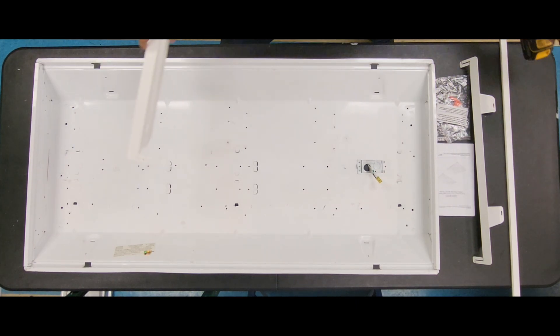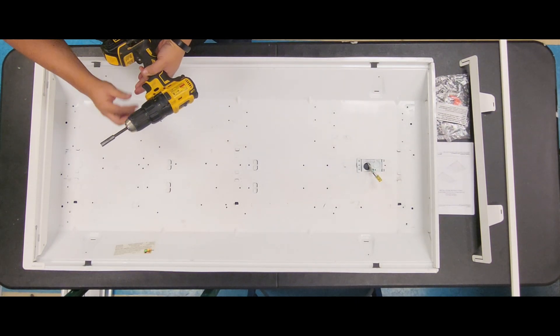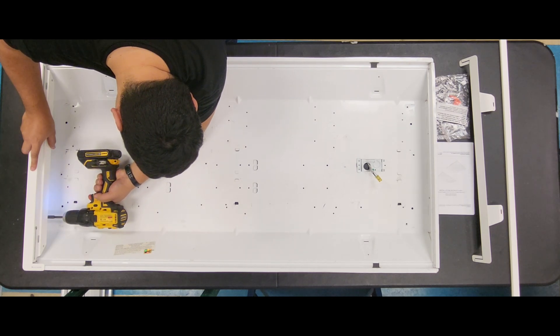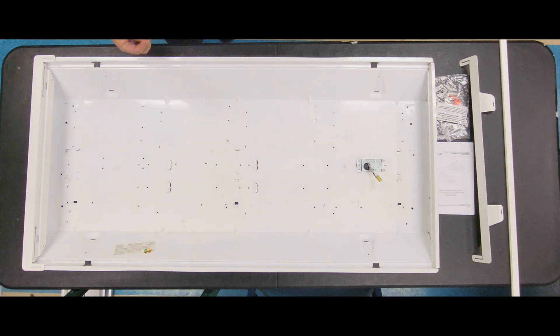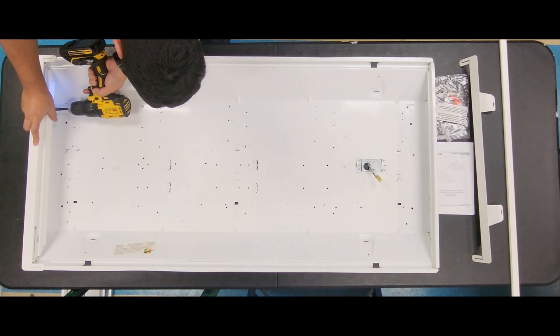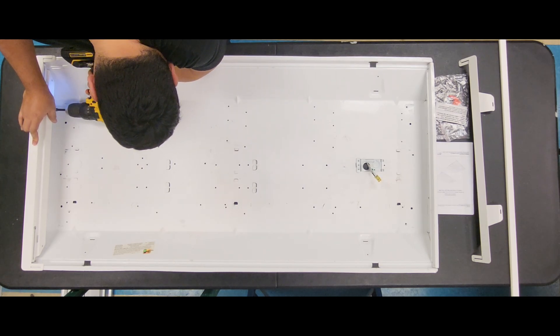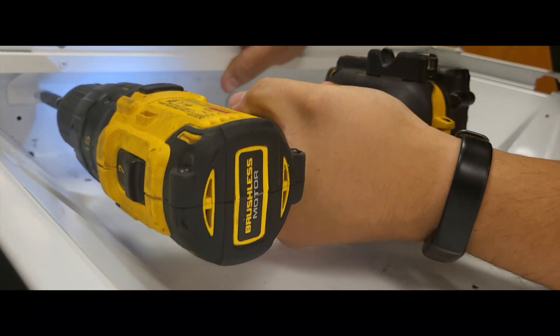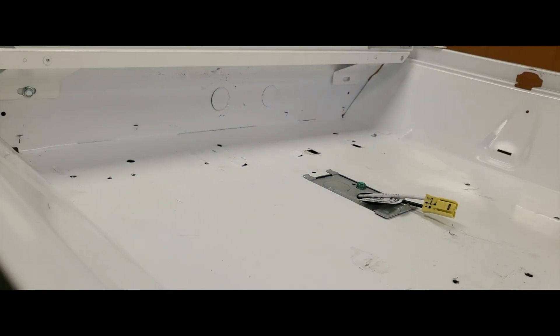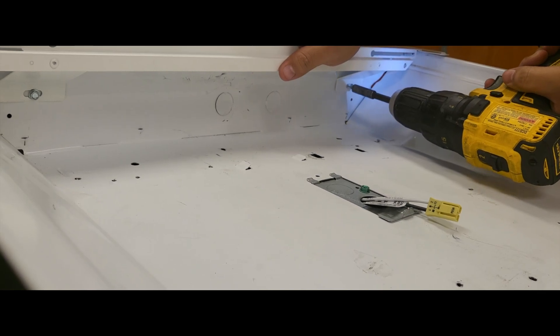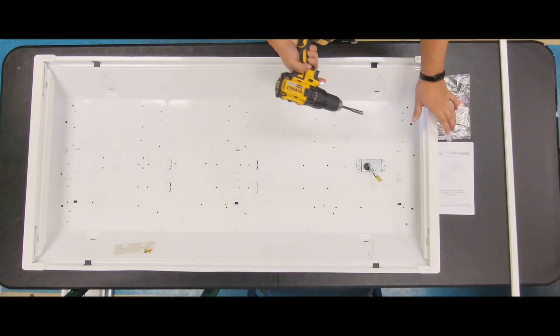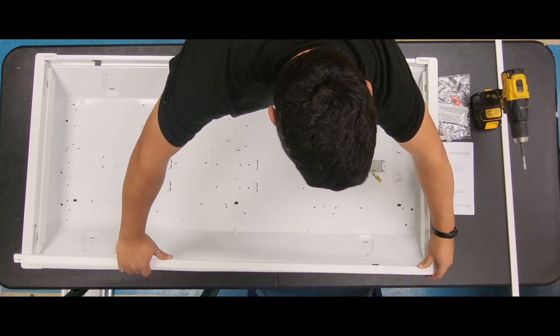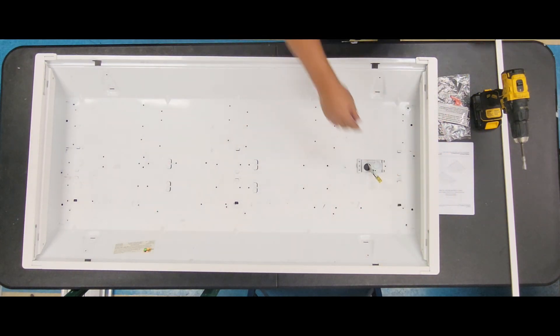Next, we're going to start the installation process of our retrofit kit by installing the end brackets. These are going to be mounted on the ends of the luminaire using the self-tapping screws provided in the hardware bag. Once those end brackets are installed, the side mounting brackets can be installed by clipping the side tabs into the end bracket slots.